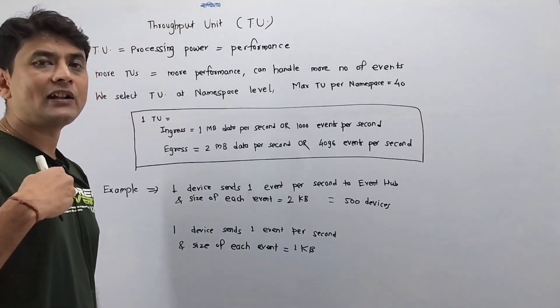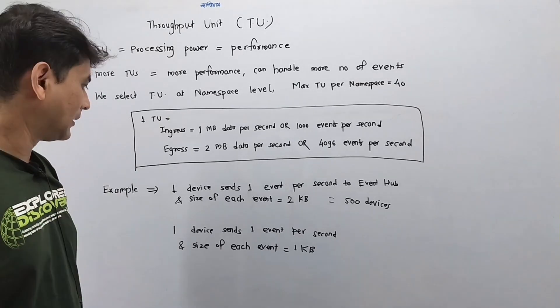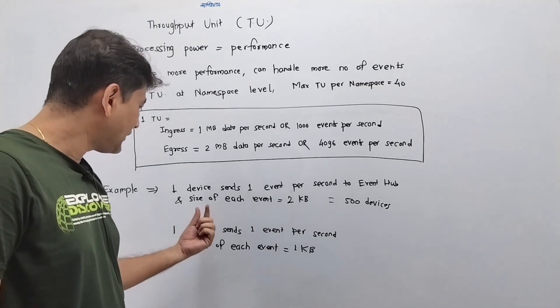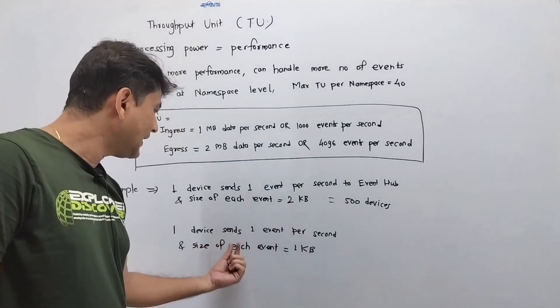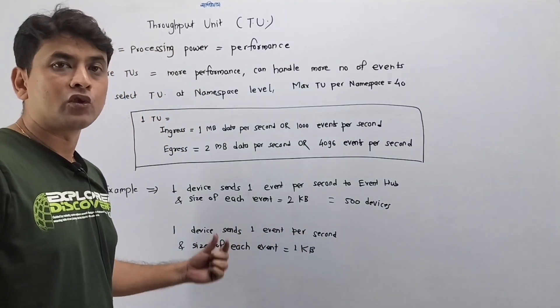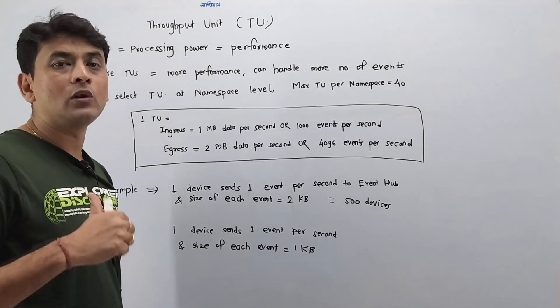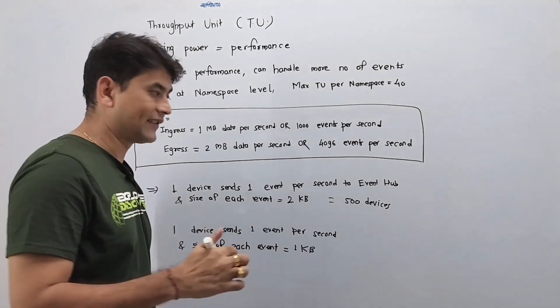Let's understand it with another example. Say you have one device which sends one event per second and the size of each event is 1 KB. In that case, one TU will be able to handle 1000 devices.